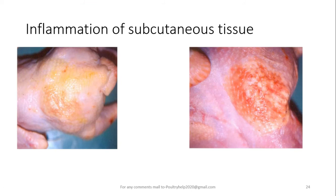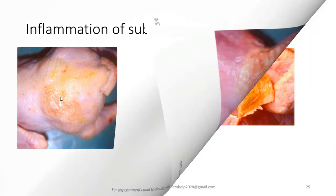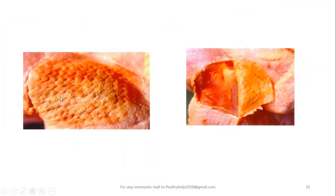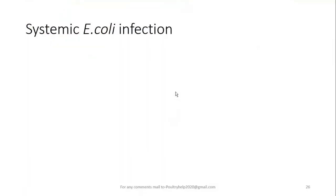Another finding is inflammation in subcutaneous tissue — cellulitis. This is characterized by reddening patches in the thigh muscle and breast muscle. When these red patches are opened, fibrinous deposition can be found.